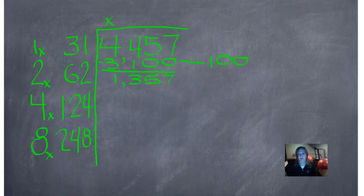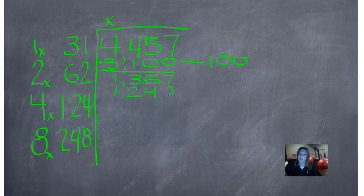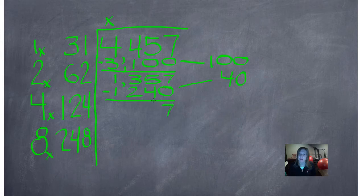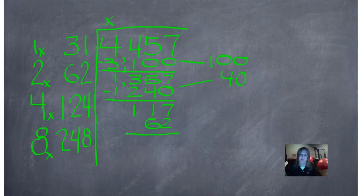We're looking for the closest number to 13 without going over, and there isn't one. So the closest number to 135 is 124. I only have to annex one zero here. I'm going to take that four and annex one zero next to that, connect those, and we'll subtract. 7 minus 0 is 7, 5 minus 4 is 1, and 3 minus 2 is 1. So the closest number to 117 without going over — I'm always using the numbers in this column to put in the house — is 62. I don't have to annex any zeros this time, so I'll just set the two right over here in the ones place.